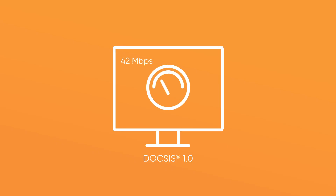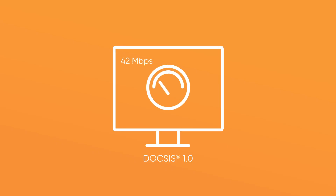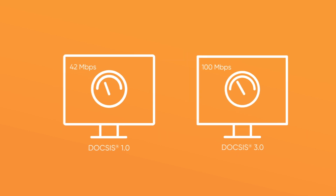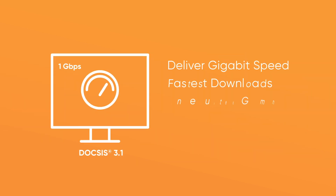From the initial 1.0 version that offered top speeds of 42 megabits per second, to DOCSIS 3.0, which provided more than 100 megabits per second for internet video and VoIP service, to the current standard DOCSIS 3.1, which can deliver multi-gigabit speeds for the fastest downloads, uninterrupted online gaming, and multiple 4K video streams.